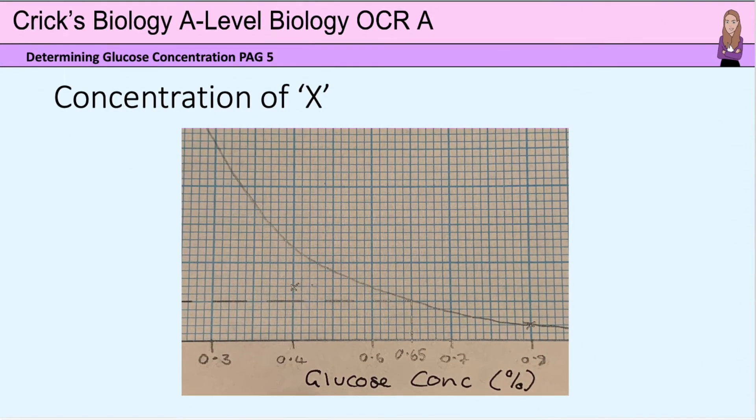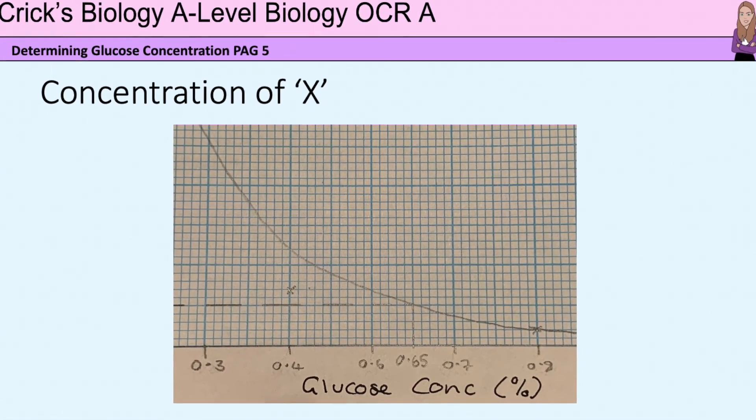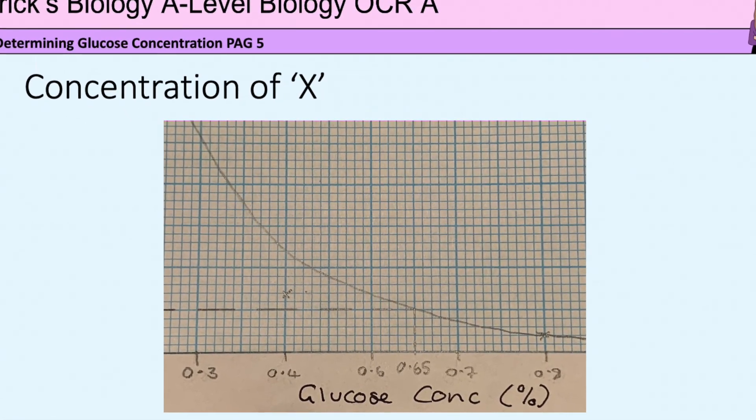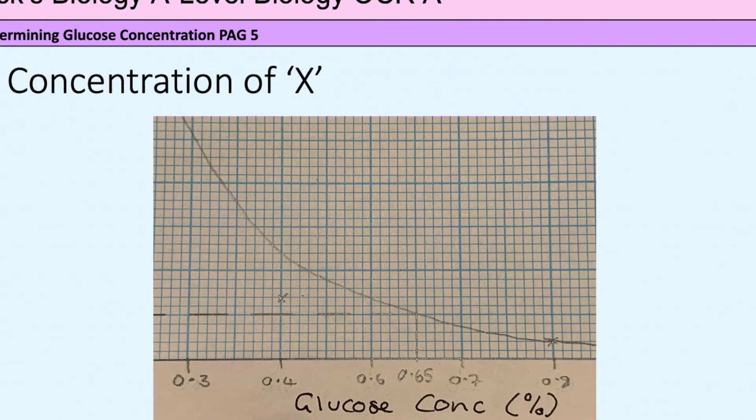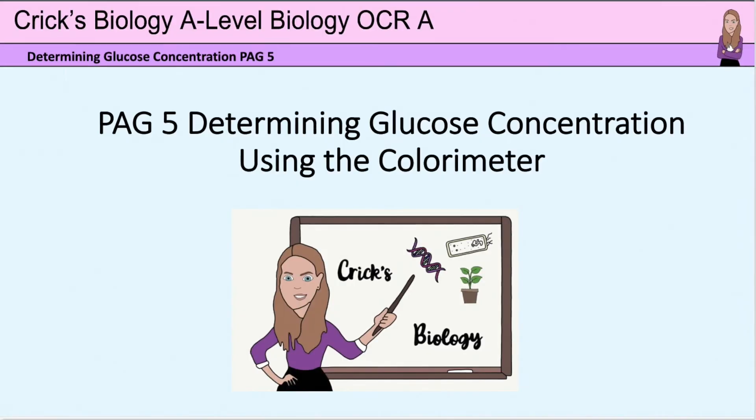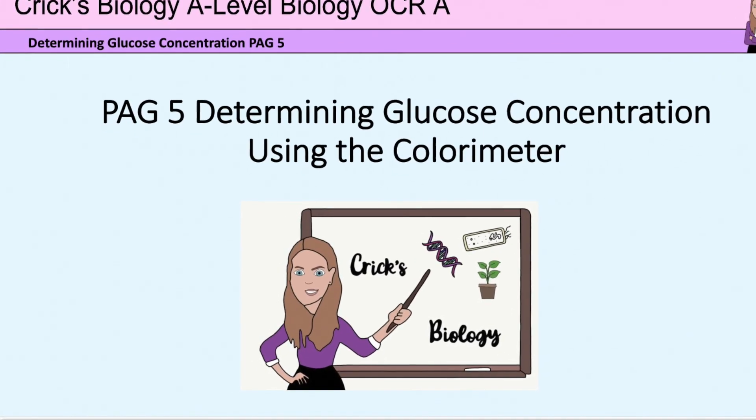And so you can see the final result for X is 0.65% glucose. So you have now learned how to do the quantitative test for reducing sugar using a colorimeter.